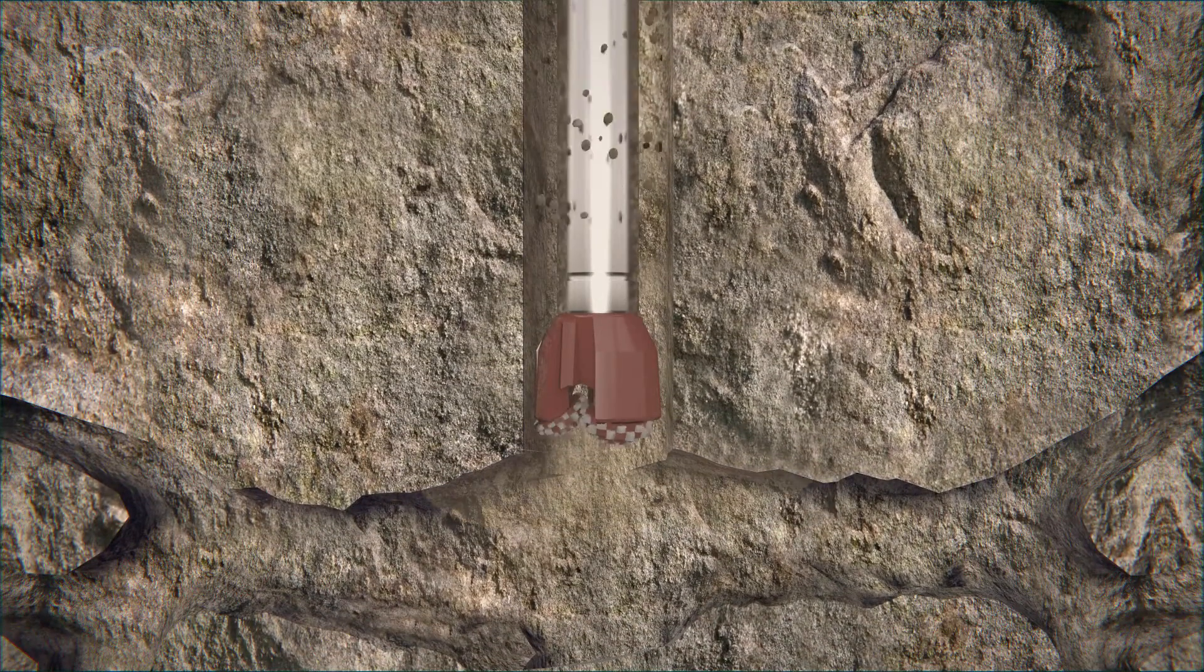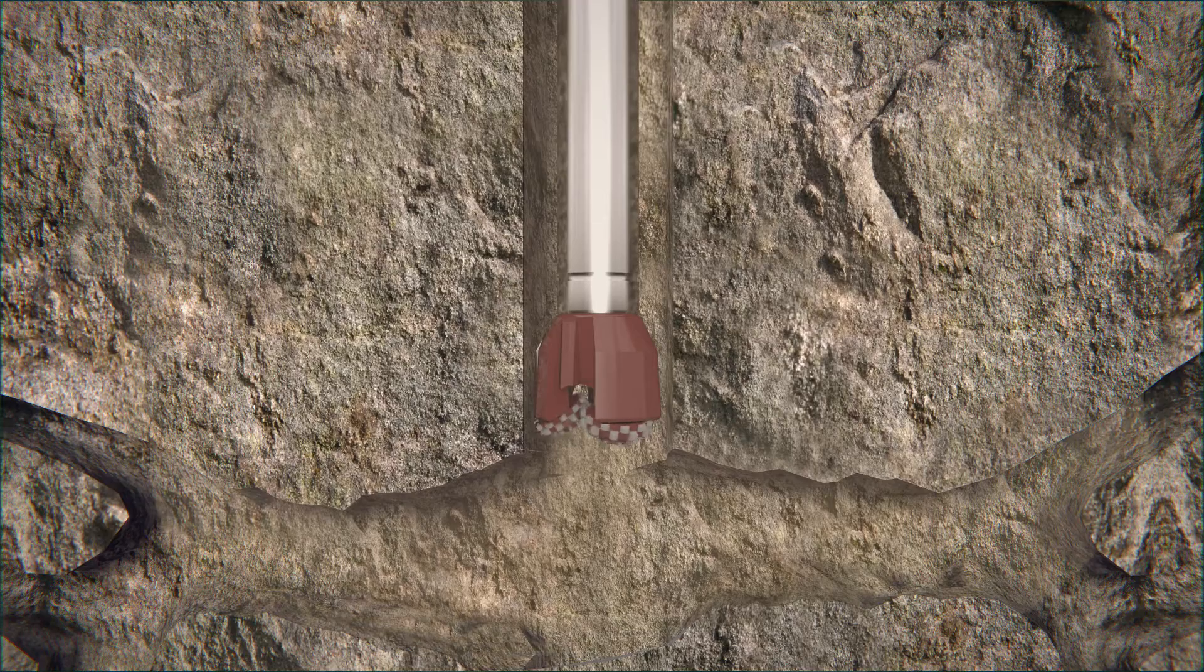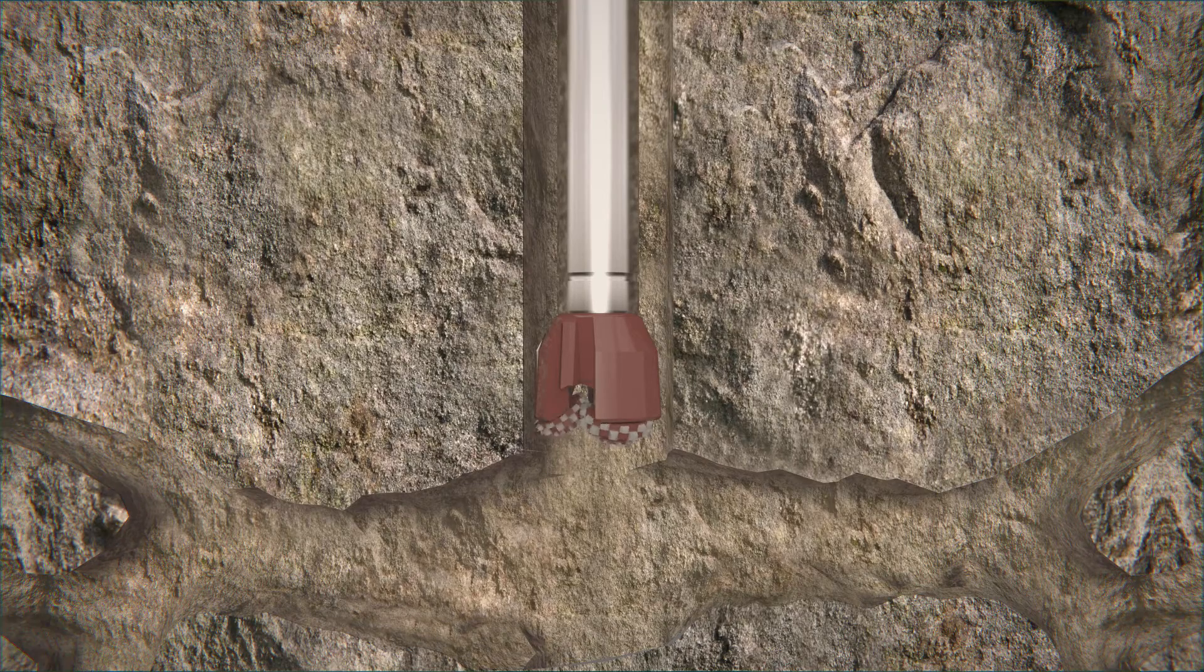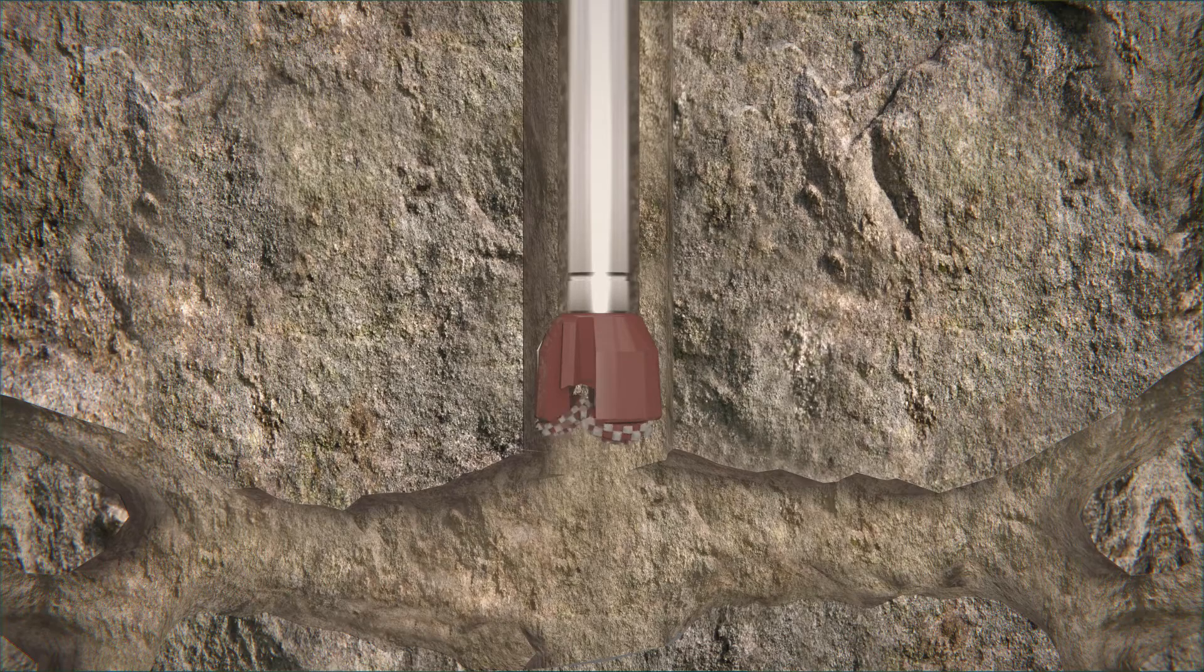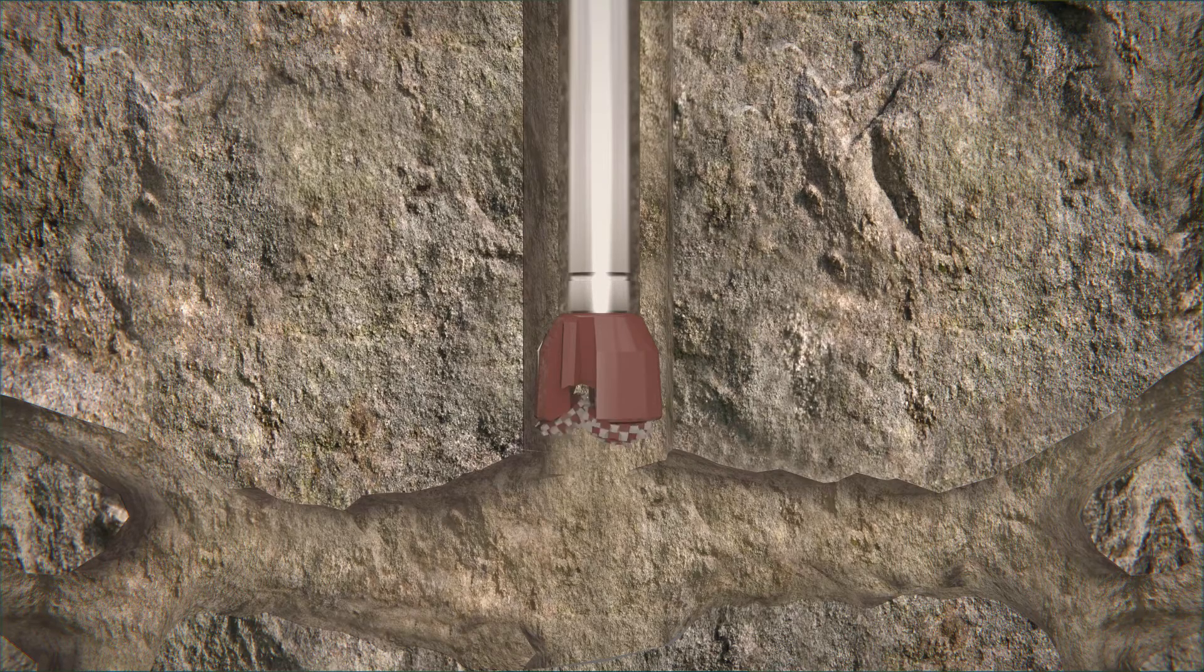When lost circulation occurs, a fast proven response is needed to keep drilling program and well costs under control. Loss Cure solution is a quick and cost-effective solution for stopping loss circulation in natural or induced fractures, channels in weak zones, or flowing over pressured zones.